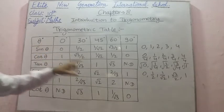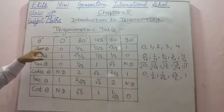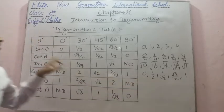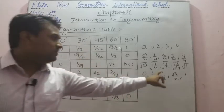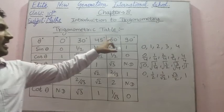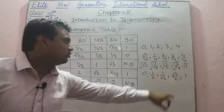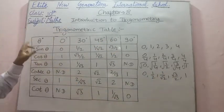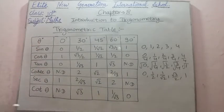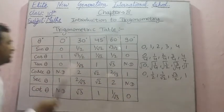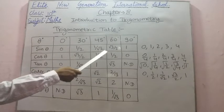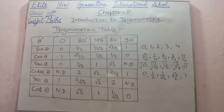So the value of sin 0° is 0, sin 30° is 1/2, sin 45° is 1/√2, sin 60° is √3/2, and sin 90° is 1. In this way we fill the values of sin theta: 0, 1/2, 1/√2, √3/2, and 1.